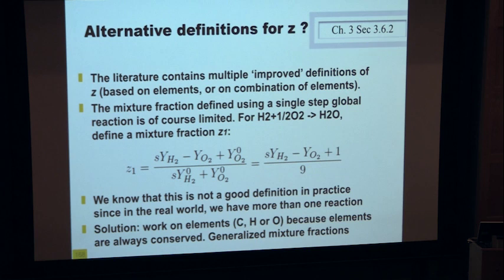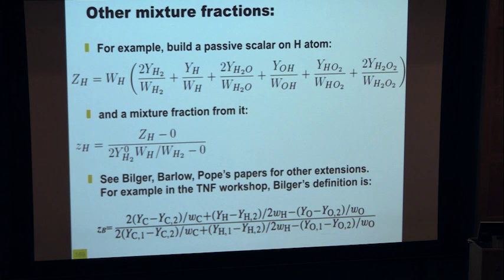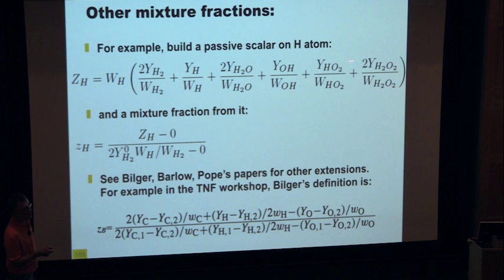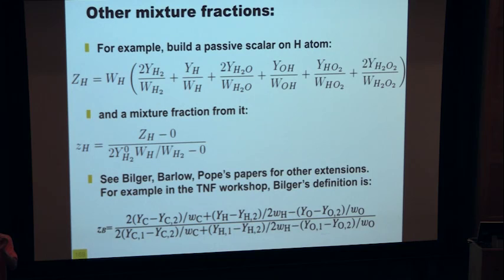When people recognized this limitation, they started working on improved definitions of Z. For example, instead of using mass fractions, you can use elements, because those are truly conserved. This is what we call generalized mixture fractions, and you will find many of them in the literature. One example is a passive scalar Z_H based on hydrogen: you take all species containing hydrogen, count the number of moles by dividing by molecular weight, and build a passive scalar. That total hydrogen element mass is conserved — the hydrogen element cannot become carbon.